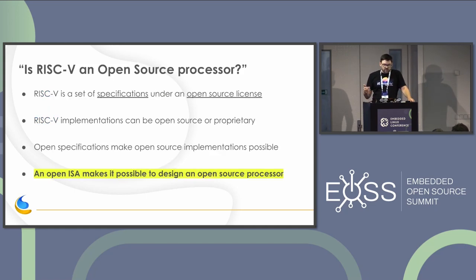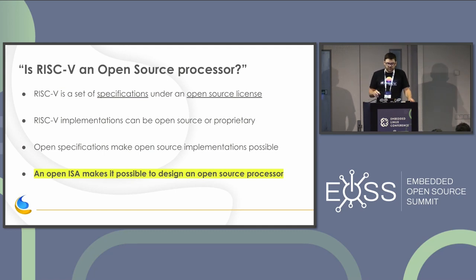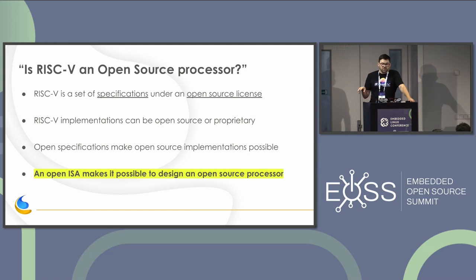One important thing to understand with RISC-V is that it's not an open source processor itself — it's just a specification for an instruction set, under an open source license. But what makes me excited about RISC-V is the fact that having an open specification means you can make open source implementations or an open source processor. Someday we could have processors in our single board computers where the core is actually open source.